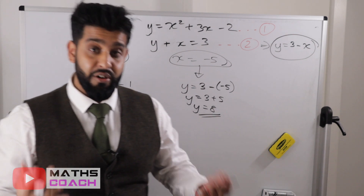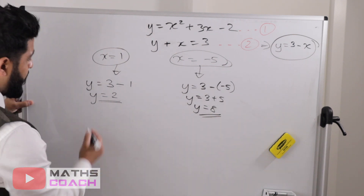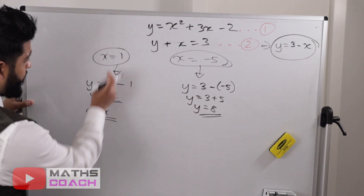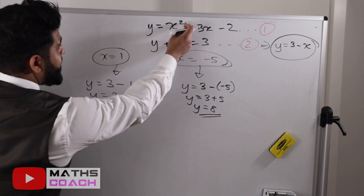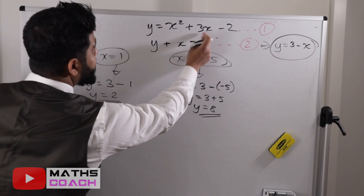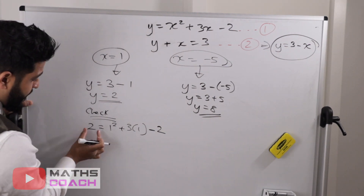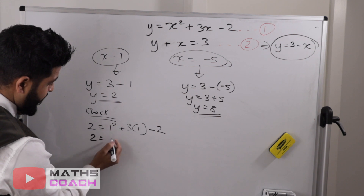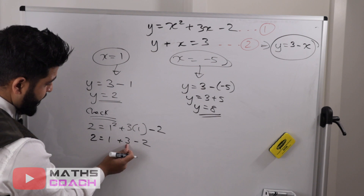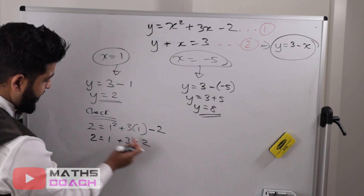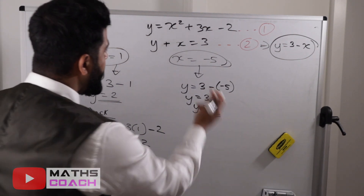I need to check these answers by substituting back into the quadratic. For x equals 1 and y equals 2: substitute into y equals x squared plus 3x minus 2. That gives 1 squared plus 3 times 1 minus 2, which is 1 plus 3 minus 2 equals 2. So 2 equals 2 — that side checks out correctly.